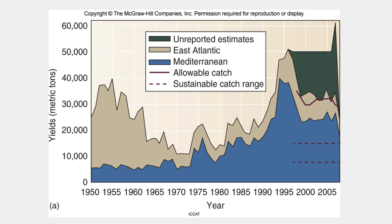Canadian fisheries biologists estimate that only 10% of the top predators, such as swordfish, marlin, tuna, and shark, remain in the Atlantic Ocean. Groundfish, such as cod, flounder, halibut, and hake, are also severely depleted. You can avoid adding to this overharvest by eating only abundant, sustainably harvested varieties.